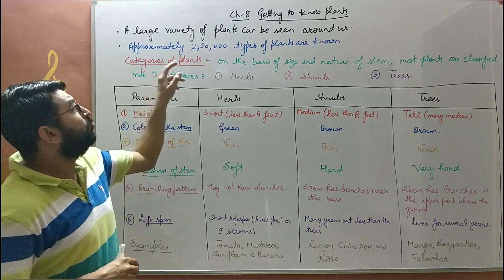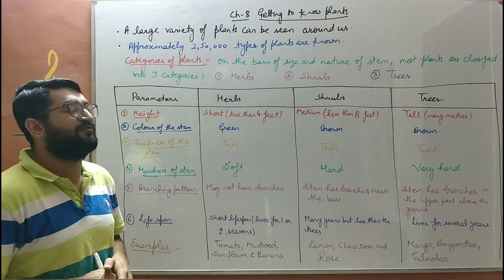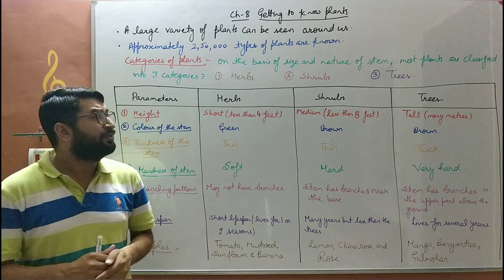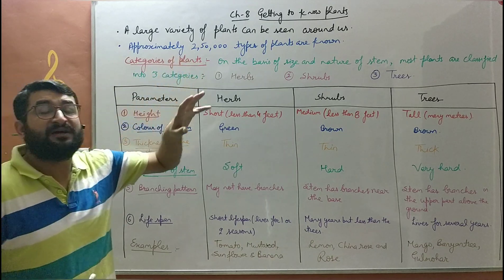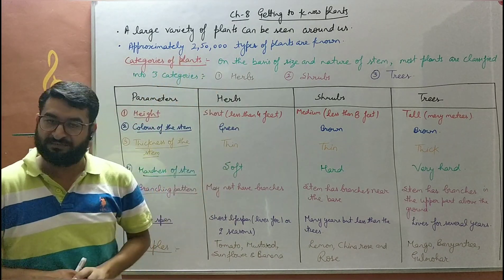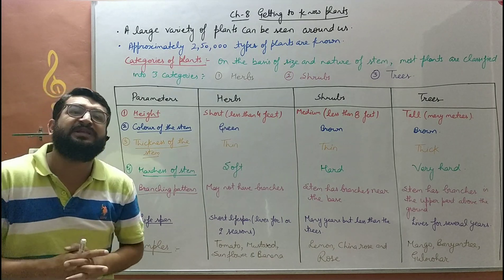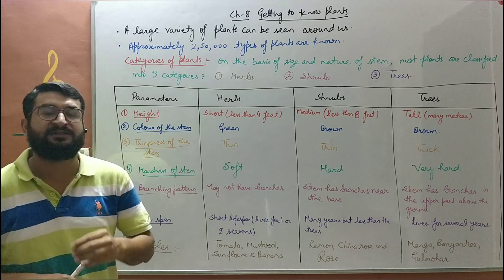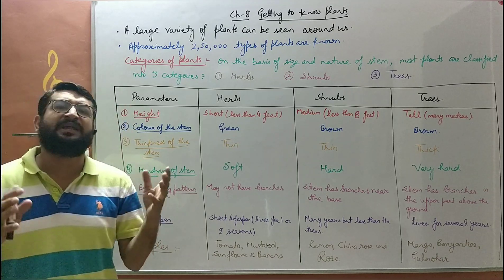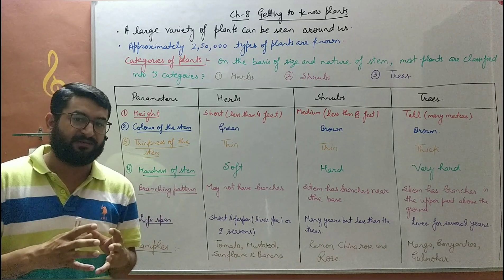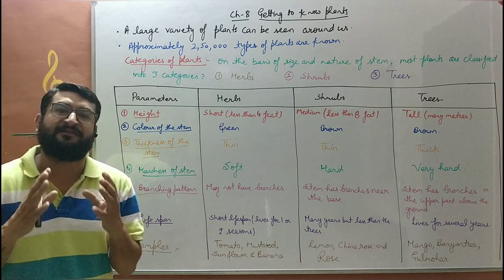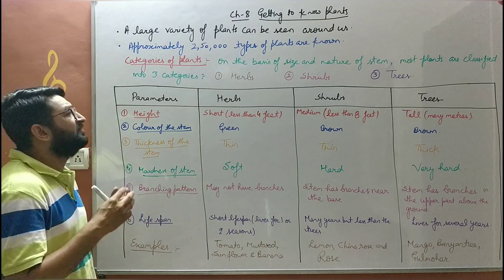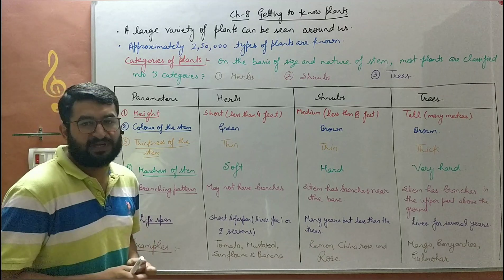There are approximately 250,000 types of plants known — that's a very large number. Science believes there are many varieties of plants which are yet to be discovered. There are certain regions on earth which we cannot reach till now, so there is a large number of plants present around us.